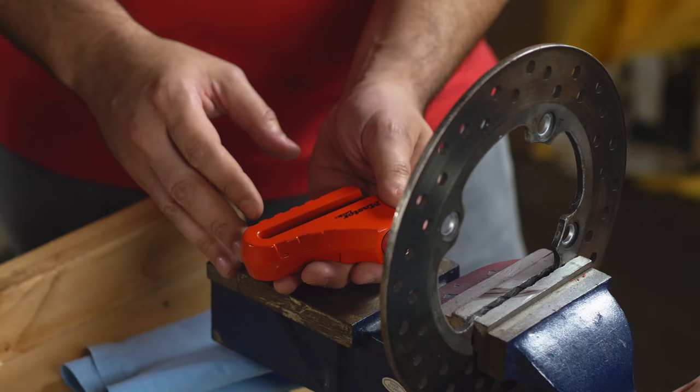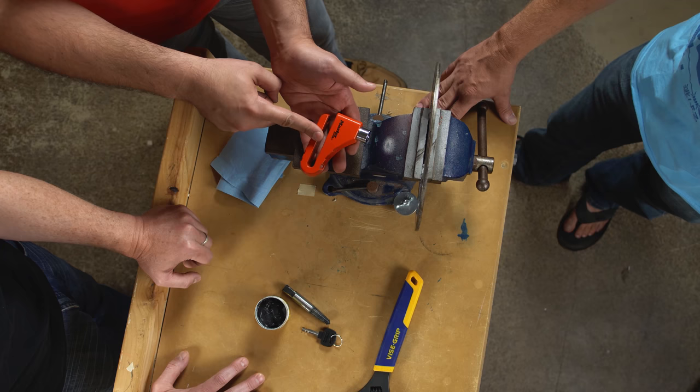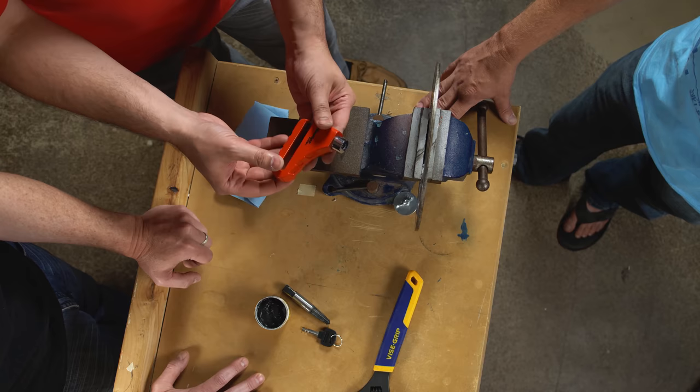This is made out of cast zinc, or a zinc alloy of some kind. And while it's great for casting, it's not very strong. That allows us to do some things with this that we wouldn't be able to do with a hardened steel lock.